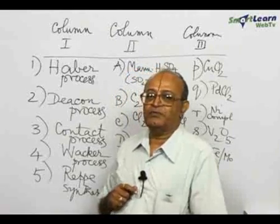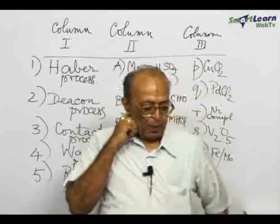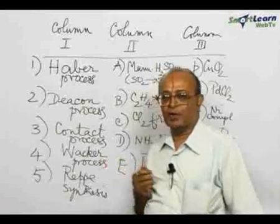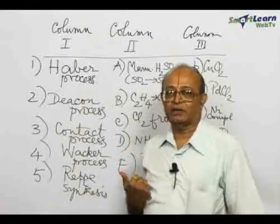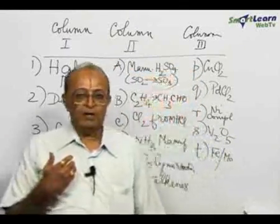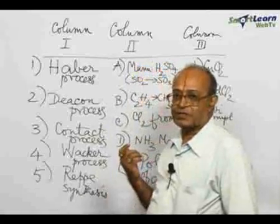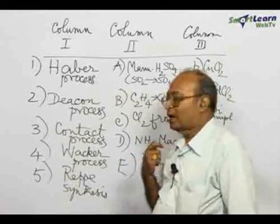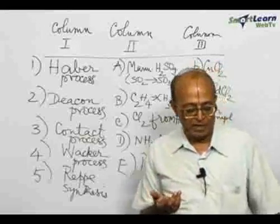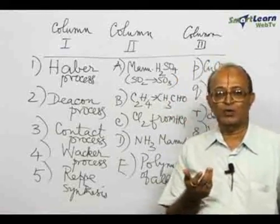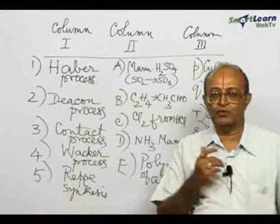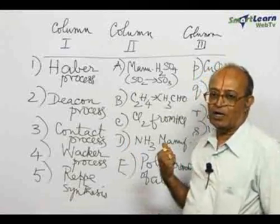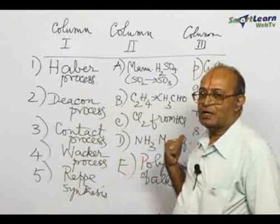As far as the IIT question paper is concerned, one section will be of matching type. Two columns are usually given, but here I have given three columns: the first column is the name given to the process, the second column shows the actual conversions for which this name is given, and the third column shows the catalyst that is normally used. I have connected all three columns — name, conversion, and catalyst.